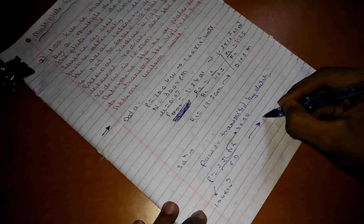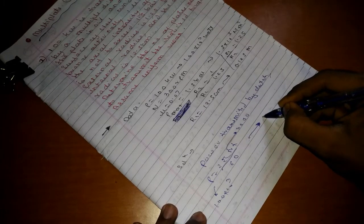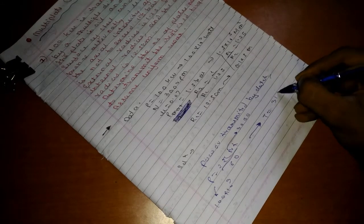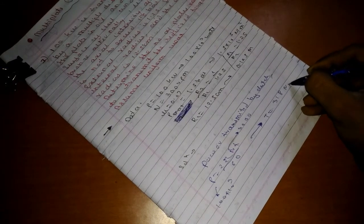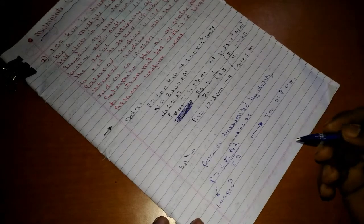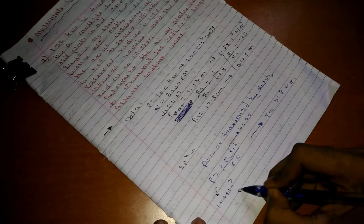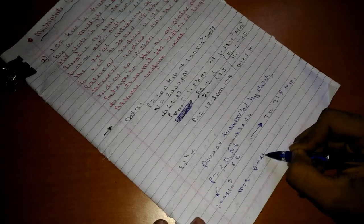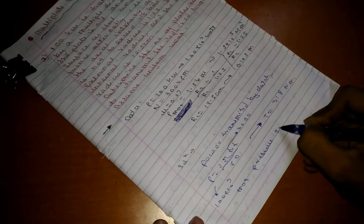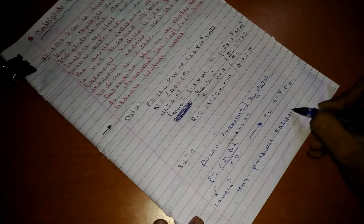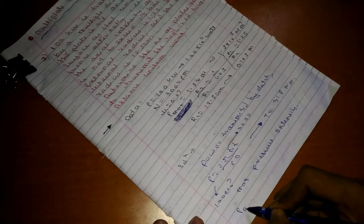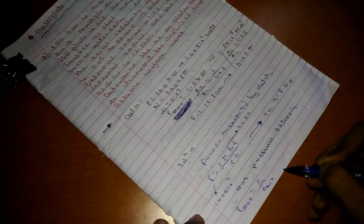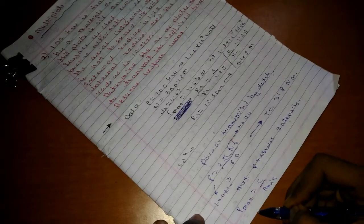From here we get T equals 318 Nm. The next is maximum pressure intensity. Pmax can be written as C/R minimum. Since we know R minimum is 0.1.